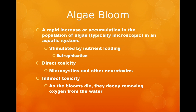Algal blooms can also be indirectly harmful to aquatic life, especially fish, because as the algae die, they are decomposed. As decomposition occurs, oxygen is removed from the water column. If too much decomposition occurs and the oxygen levels are depleted, fish cannot survive.